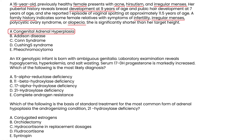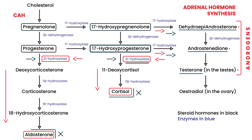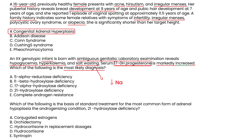Vignette 2: A XX genotypic infant is born with ambiguous genitalia. Lab exams reveal hypoglycemia, hyperkalemia, and salt wasting — meaning low levels of sodium. Serum 17-hydroxyprogesterone is markedly increased. 17-hydroxyprogesterone is elevated because it cannot break down, as 21-hydroxylase is deficient and this pathway cannot move forward. The most likely diagnosis is 21-hydroxylase deficiency.